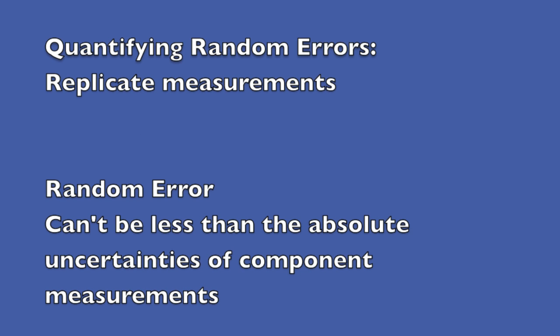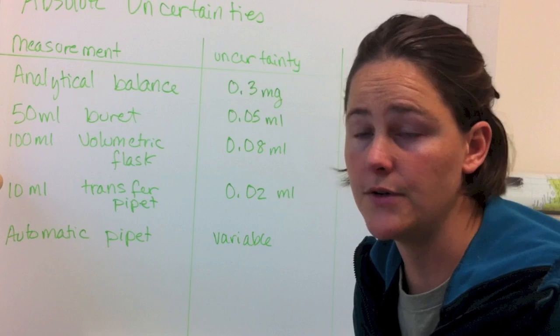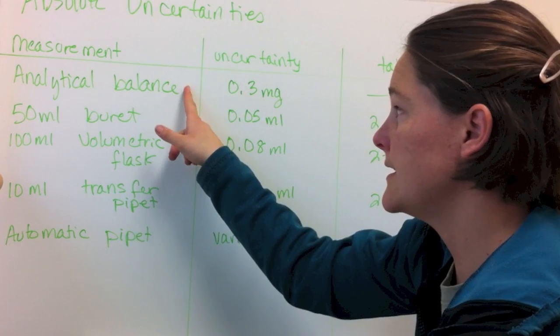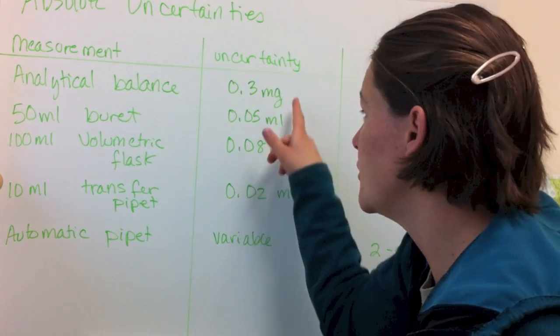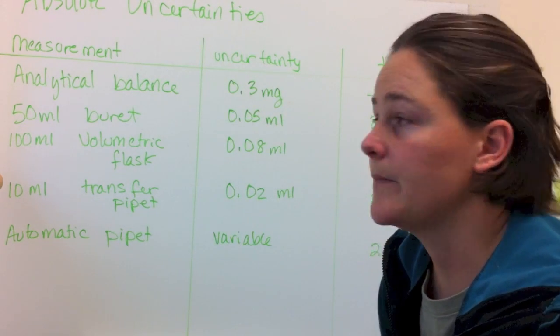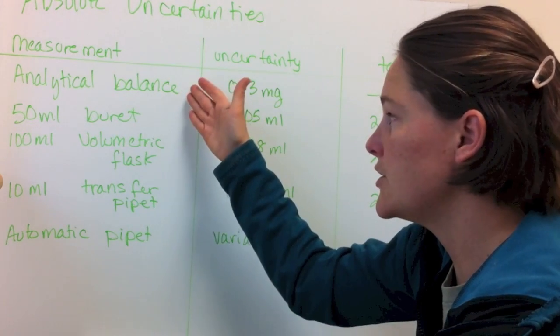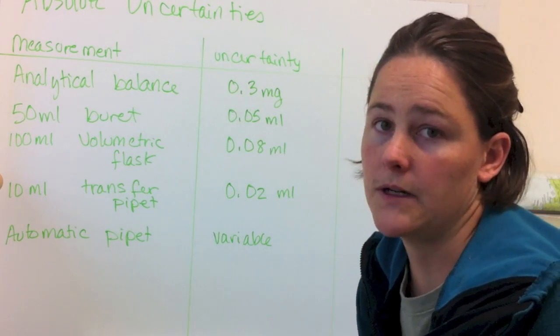Another thing to think about when you're thinking about errors is the absolute uncertainties associated with each of the techniques that you're using. So, for example, an analytical balance has an inherent uncertainty of 0.3 milligrams. And that's true not just for the analytical balance, but for all the glassware as well.